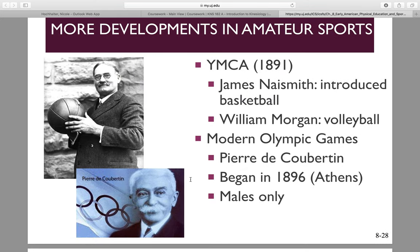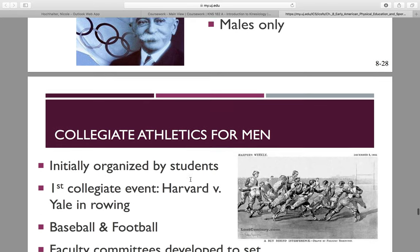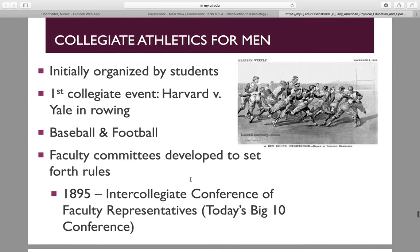James Naismith introduced us to basketball. William Morgan brought us volleyball. The modern Olympics began in 1896, and males only were allowed. Now we have collegiate athletics — remember, collegiate athletics came second. The first collegiate event to ever happen was Harvard versus Yale in a rowing competition. Then there was baseball and football. Faculty committees developed to set forth rules, as initially students developed the rules, but things got out of hand — classes were being missed and athletics and academics weren't quite lining up.